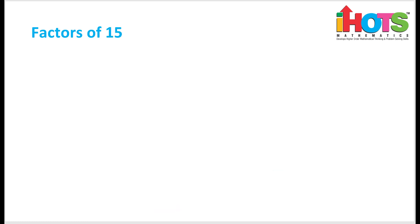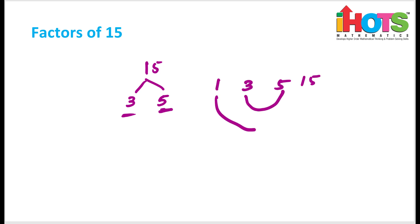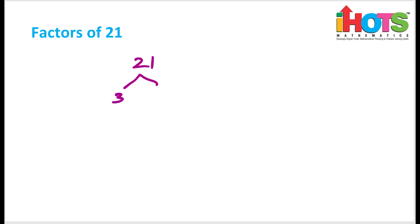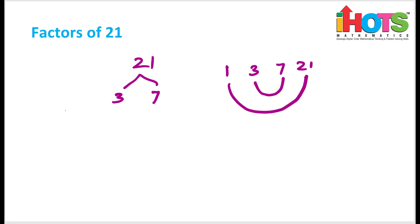Let me now come to 15. We have 3 and 5, and further we cannot divide, so the factors are 1, 15, 3, 5 — very easily you get this. Next is 21, which is also very easy. This is 3 into 7, and you can't further divide this. So the factors are 1, 21, 3, 7.